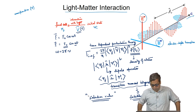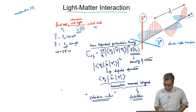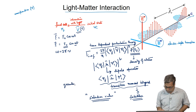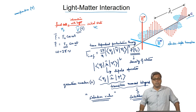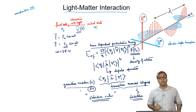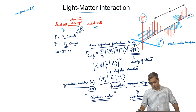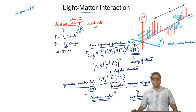Intuitively, the wave functions in the transition moment integral in general depend on quantum numbers, say n, and such selection rules are often stated in terms of change in quantum numbers, or delta n. This will be discussed further in specific cases when we go into different forms of spectroscopy. This brings us to the end of this lecture.